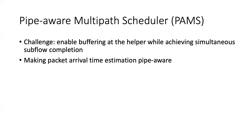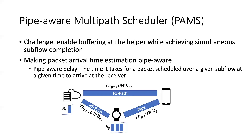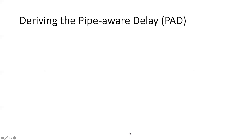Although PAMS is originally designed for MPBound, it also applies to general cases where multipath transport meets TCP connection splitting. PAMS is built upon a key concept called pipe-aware delay, or PAD, which is a mathematical model we introduce to estimate the time it takes for a packet scheduled over a given subflow at a given time to arrive at the receiver, under given network conditions — including throughput and one-way delay for different remote and local links, as well as the buffer level at the server and helpers. Let's now derive PAD.